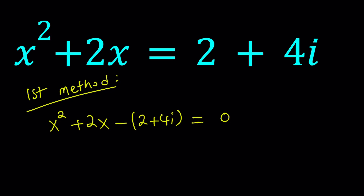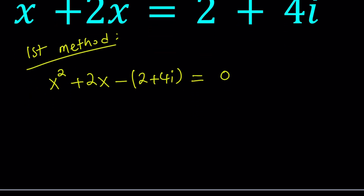Notice that the negative of 2 plus 4i is our constant term, because i is a constant. Even though it's imaginary or complex, it's a constant — it's not a variable. So we can use the quadratic formula. Remember: if you have ax squared plus bx plus c equals 0, then x equals negative b plus or minus the square root of b squared minus 4ac, all over 2a.